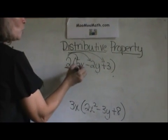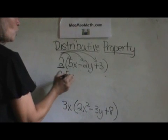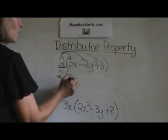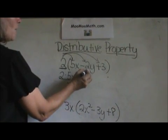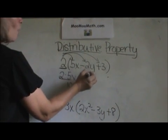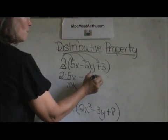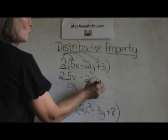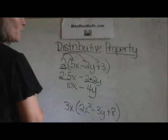So I'm taking 2 times 5x and 2 times 5 is 10 so that's 10 and I bring down my x. Then I take 2 times negative 2y. So I have a negative and the 2 times 2y. 2 times 2 is 4y. And I just bring down my variable.